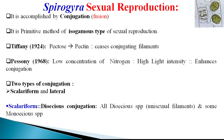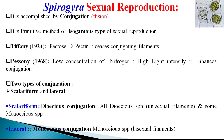Lateral conjugation is rarely found and takes place between two adjacent cells of the same filament. It is also known as monoecious conjugation, which indicates that the filaments are bisexual in nature.